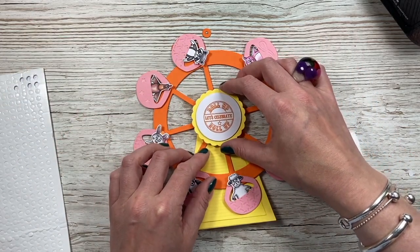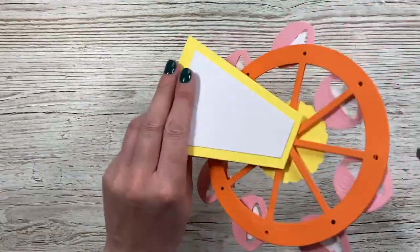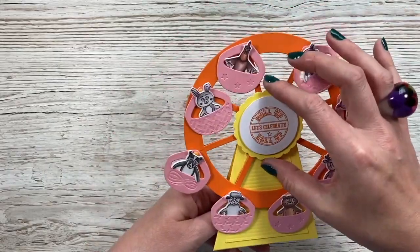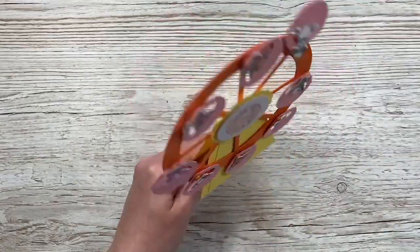You'll see now I've taken the backing off that foam little dot and I'm sticking my sentiment in the middle. Now when I spin the wheel the sentiment stays in place. If it moves it means the glue's still wet. Mine was moving a little bit there so it just needed a bit more time to dry. You'll see now that moves but the sentiment stays nice and straight.